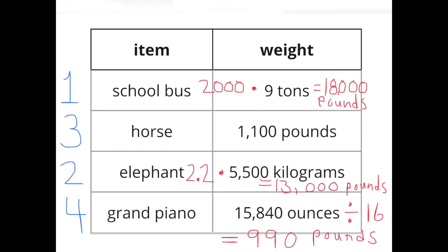The school bus is the heaviest. So that's ranked number one. The elephant is the second heaviest. The horse is the third. And then finally, the grand piano is the fourth.